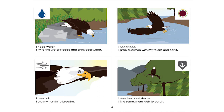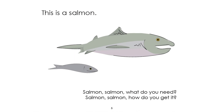Talons means sharp claws. I need air — I use my nostrils to breathe. Can you find the nostrils on the eagle? I need rest and shelter — I find somewhere to perch high for protection. Perch means to stand on a branch. Turn the page — this is a salmon.